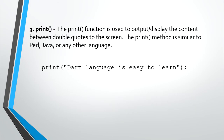Number three, the print function. The print function is used to output or display the content between double quotes to a screen. The print method is similar to Perl, Java, or any other language. In our previous video, we created a Hello World application. So in here, the print statement displays 'DART language is easy to learn.'